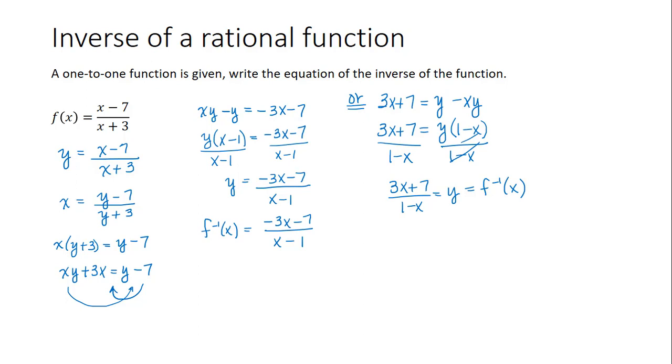Now notice those are the same thing. Because negative 3x minus 7, notice that I can factor out a negative 1 and write that as 3x plus 7 divided by x minus